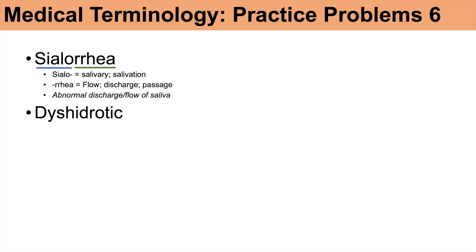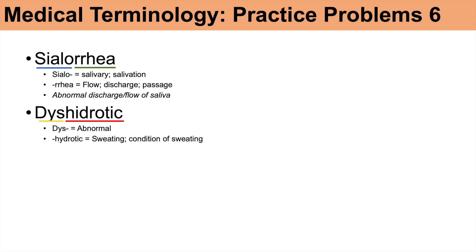The next word is dyshydrotic. Breaking it down: 'dys' means abnormal. 'Hydrotic' — with '-ic' meaning condition and 'hydro' referring to sweating — is a suffix meaning sweating or a condition of sweating. So dyshydrotic means condition of abnormal sweating.